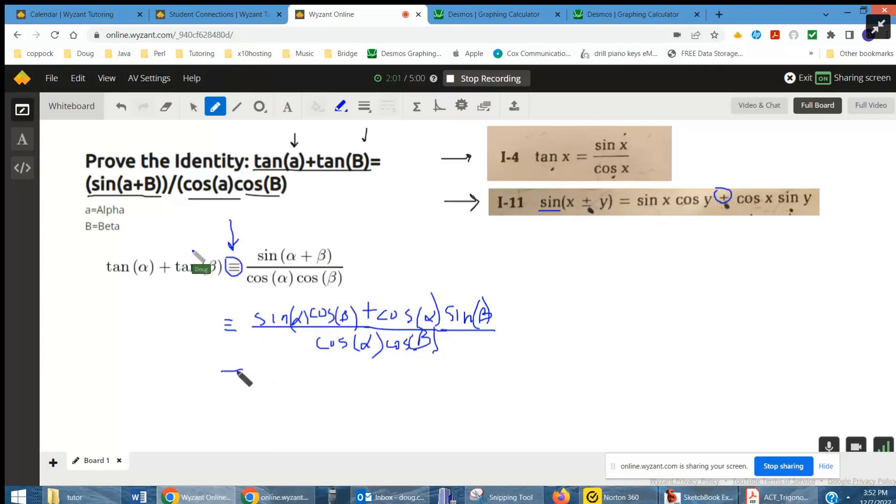Now we can rewrite this as two separate fractions. So, sine of alpha cosine beta over cosine alpha cosine beta, plus cosine alpha sine beta over cosine alpha cosine beta.